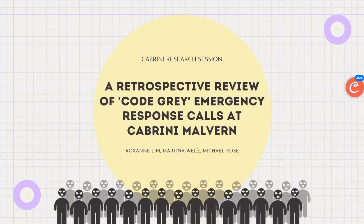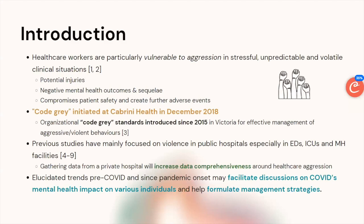Our next presenter Roxanne Lynn will talk about a retrospective review of code gray emergency response calls at Cabrini Melbourne. Healthcare workers are particularly vulnerable to aggression because the hospital can be a stressful, unpredictable, and volatile place, leading to injuries, negative mental health outcomes like burnout, and compromises to patient safety. The code gray standards were introduced in Victoria in 2015 to effectively manage aggressive or violent behaviors, implemented at Cabrini Health in December 2018.